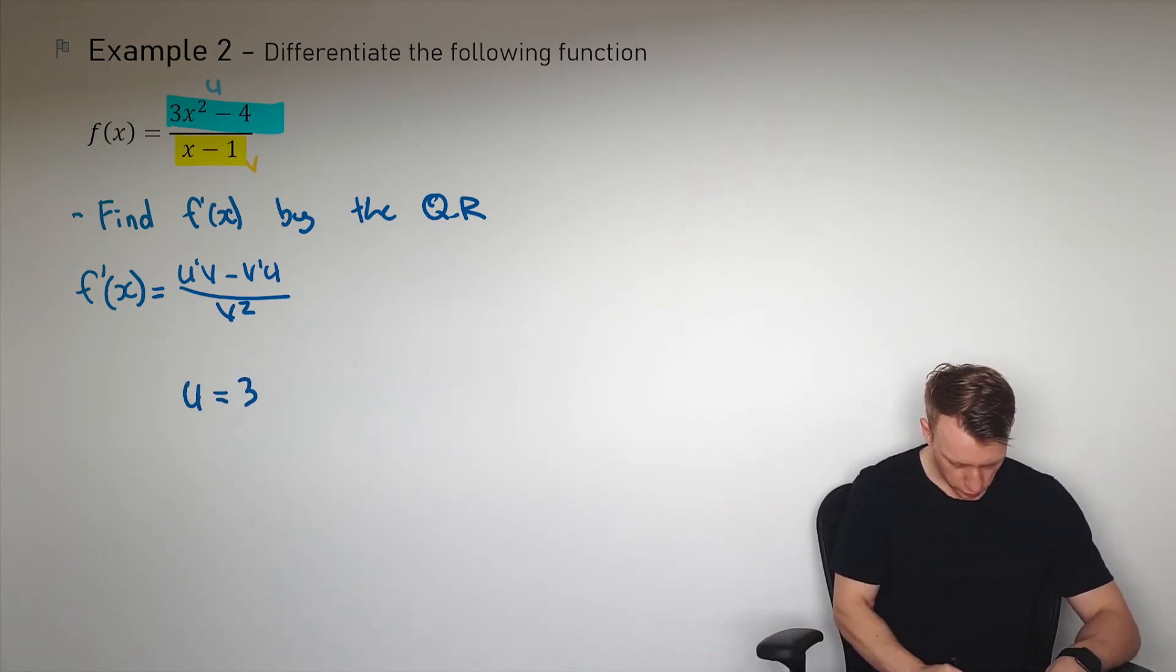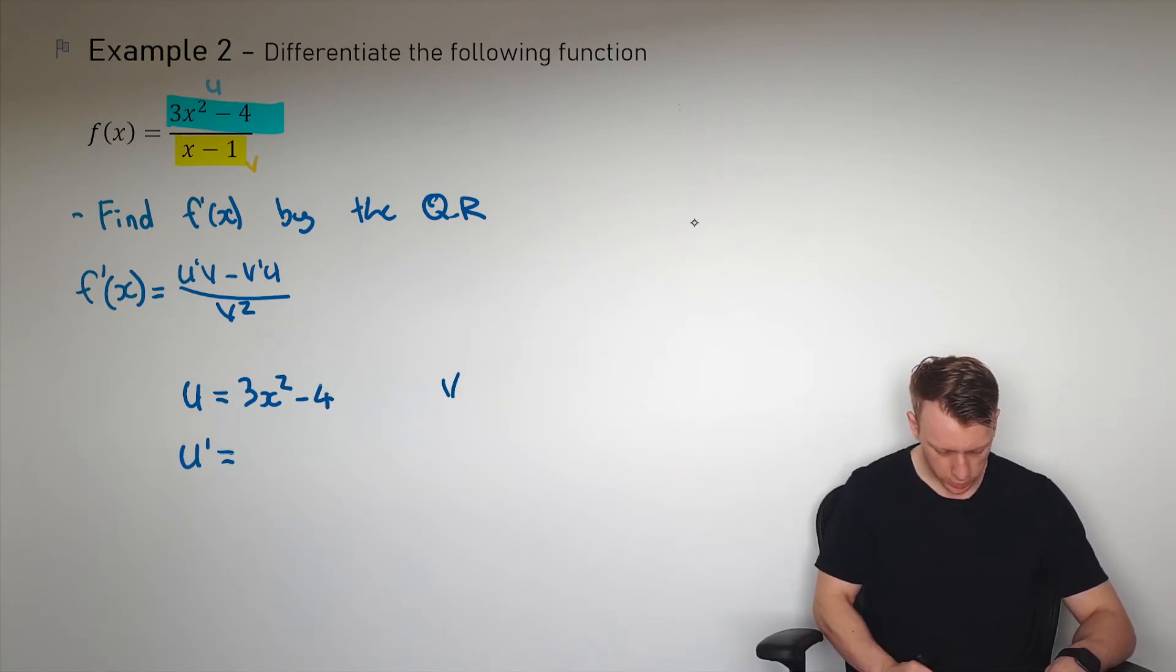So u is equal to 3x² - 4, u' is equal to (we'll find that later), v is equal to x - 1, v' is equal to (and we'll also need to find v²).